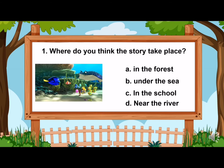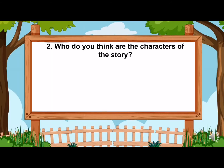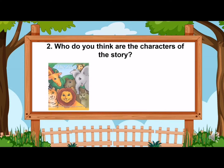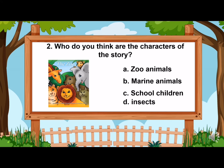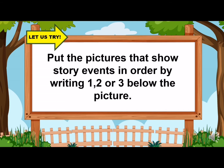Please write your answer in your answer sheet. Number 2: Who do you think are the characters of the story? For numbers 3 to 5, you have to put the pictures that show story events in order by writing 1, 2, or 3 below the picture.